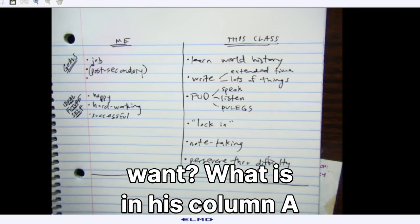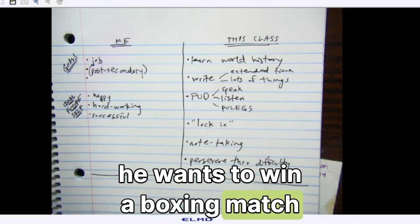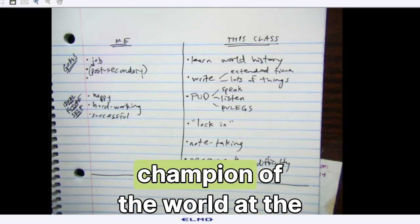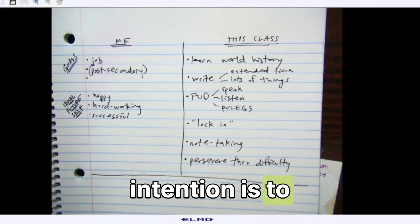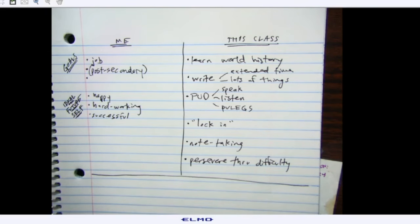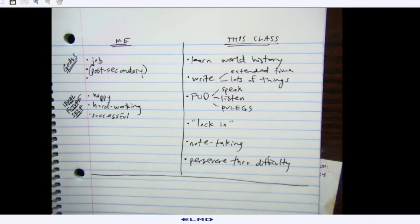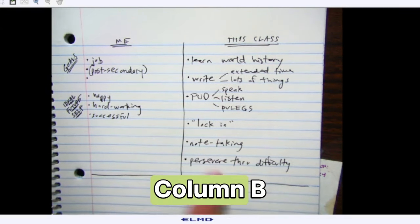What does Rocky want? What is his column A? He wants to win a boxing match. He has been invited to the ring by the heavyweight champion of the world at the time, Apollo Creed. And Apollo Creed's intention is to basically embarrass Rocky. He's doing a publicity stunt. Rocky is not interested in being embarrassed. Rocky wants to go into that ring and win. In his words, he wants to prove that he's not a bum.